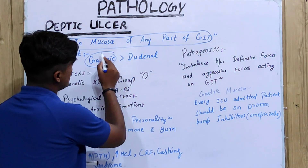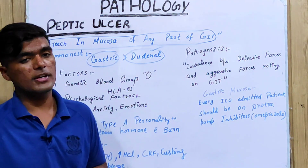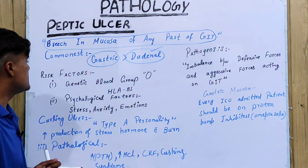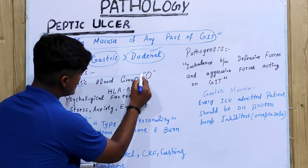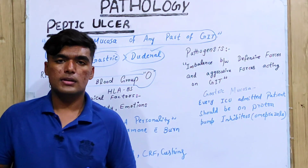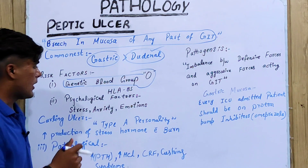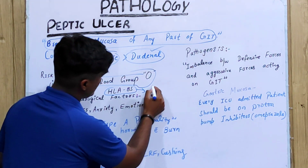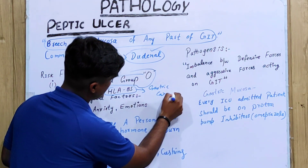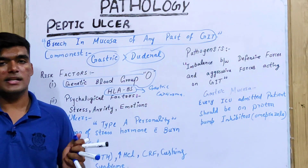The commonest sites are gastric and duodenal. Regarding risk factors, there are different types which ultimately cause this ulcer. The first risk factor is genetic. It is often seen that in patients with blood group O, there are more chances of developing peptic ulcer, and we have HLA-B5, which is associated with gastric carcinoma and is also a risk factor for this ulcer.